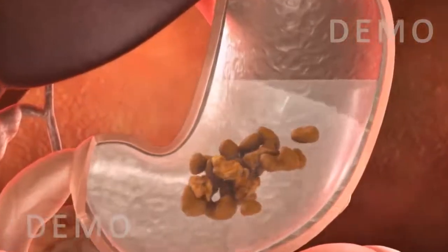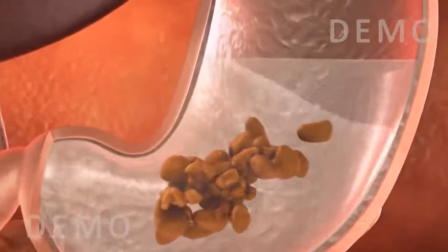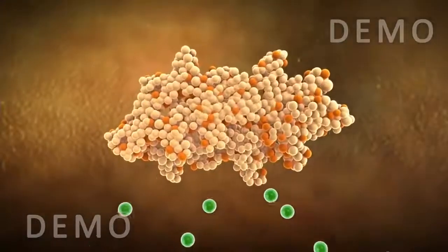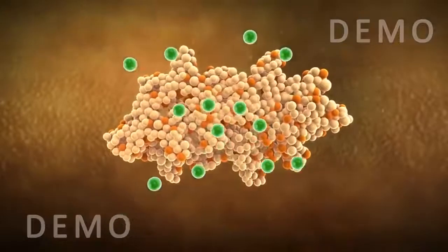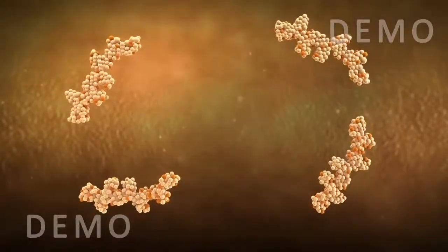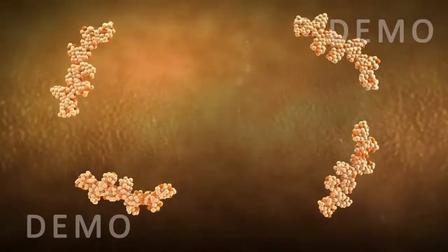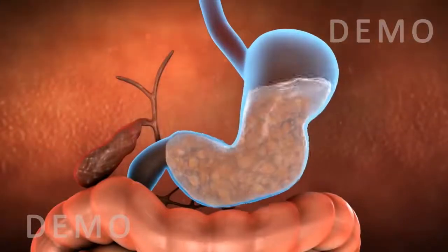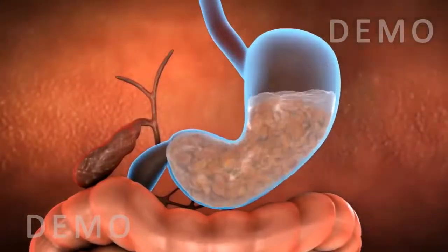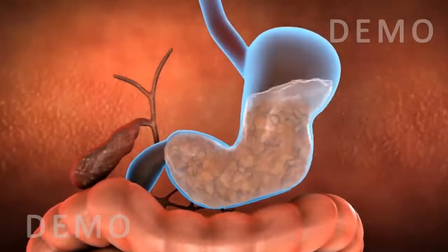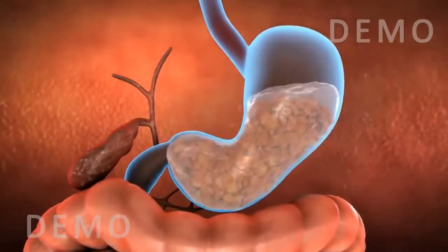The hydrochloric acid kills the bacteria that enter along with the food and also helps in the digestion of proteins. The digestive juices start breaking down the proteins present in the food into simpler forms.